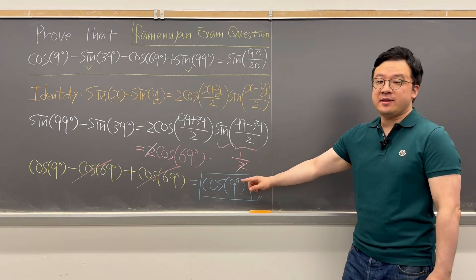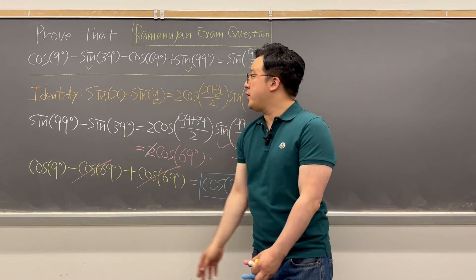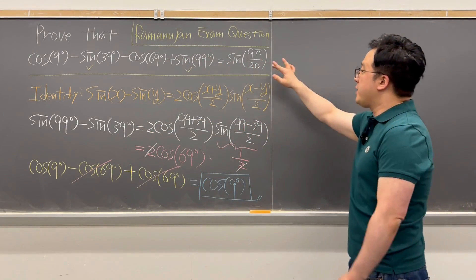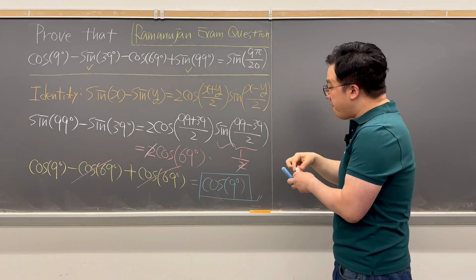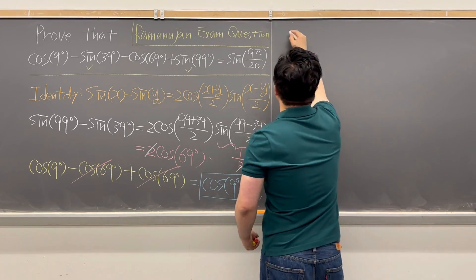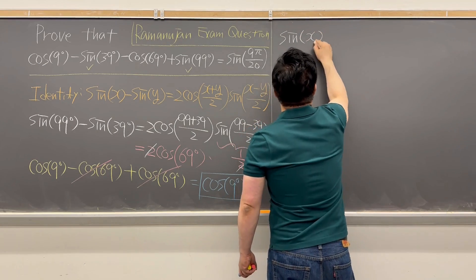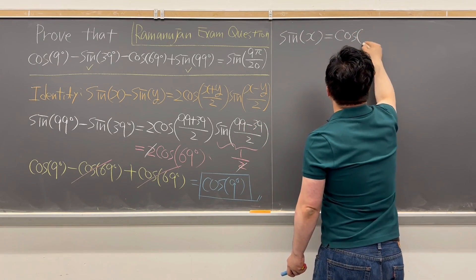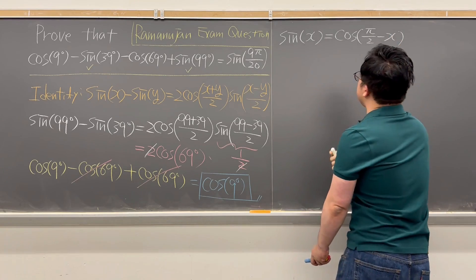So eventually, the left-hand side of the equation is only equal to cosine 9°. Now we can move on to the right-hand side. For the right-hand side, we'll be using the co-function identity, which is sine(x) equals cosine(π/2 − x).